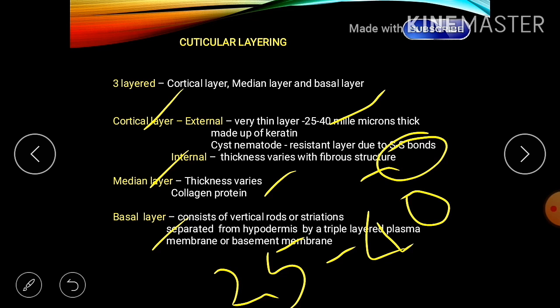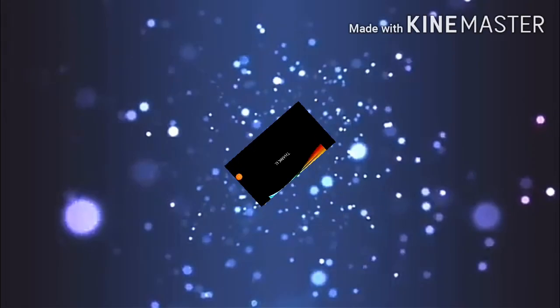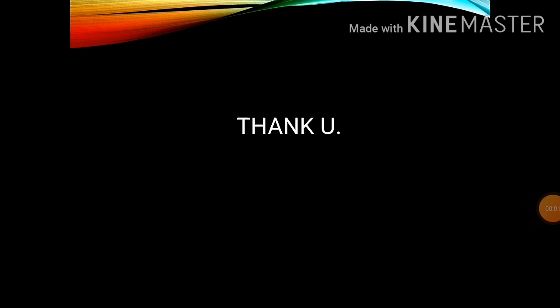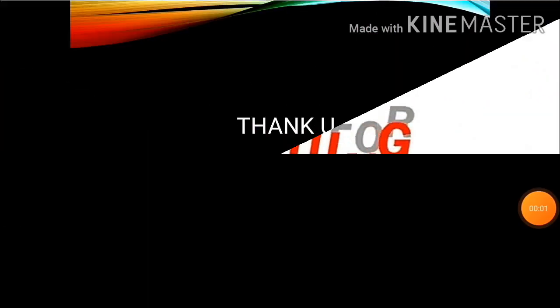Although the nematode cuticle is unsegmented, some species show cuticle markings. These occur only on the cuticle and do not extend internally — the nematodes are not internally segmented. These cuticle markings help in identification of species. Due to the length of this topic, morphology has been split into multiple parts — watch further videos for full content and don't forget to subscribe.